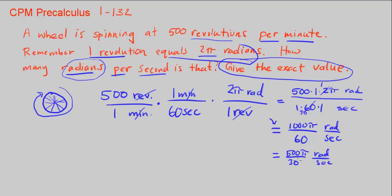How can we simplify this? We could divide the numerator and the denominator by 10. So we get 50 pi over 3 radians per second. This is the exact value. We're not going to approximate this. This is how many radians per second this wheel is spinning. Every second, it's spinning 50 pi over 3 radians.